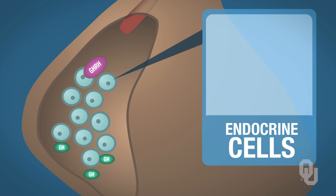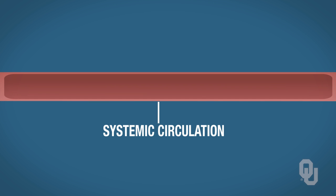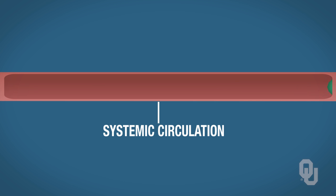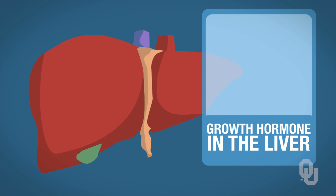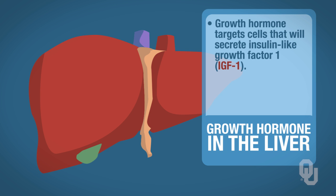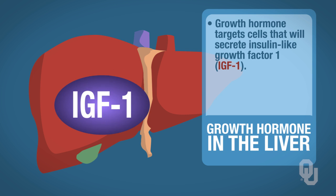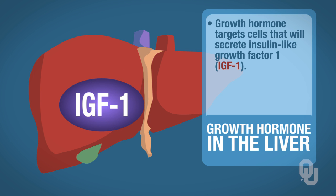Growth hormone then enters the systemic circulation, where it can target certain tissues. Growth hormone will also target the liver specifically, stimulating liver cells to synthesize and secrete insulin-like growth factor one, or IGF-1. IGF-1 is also called a somatomedin.